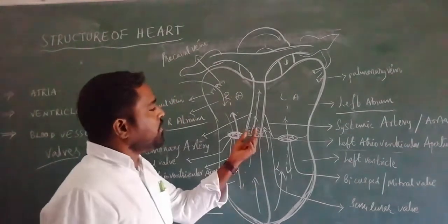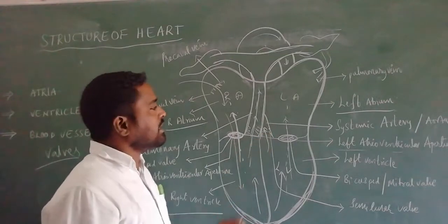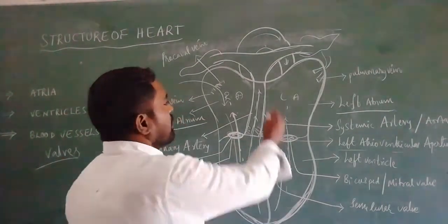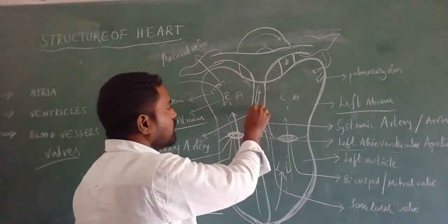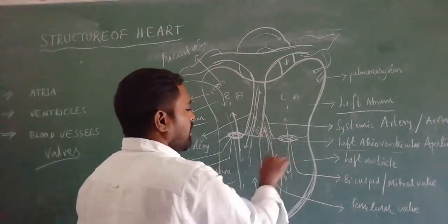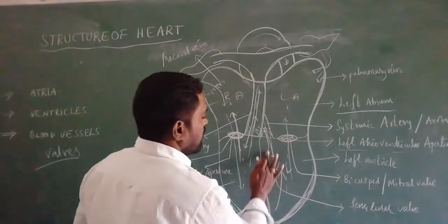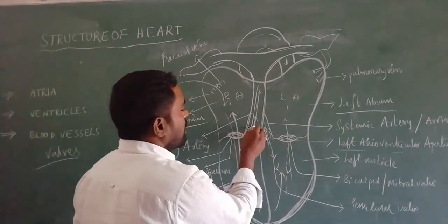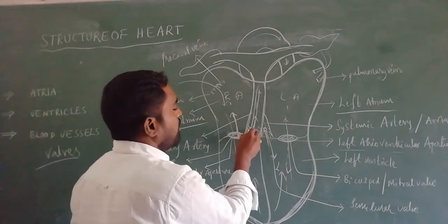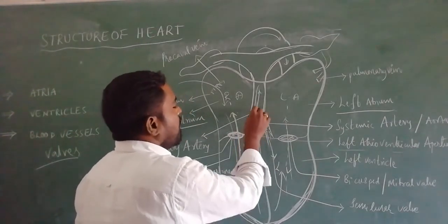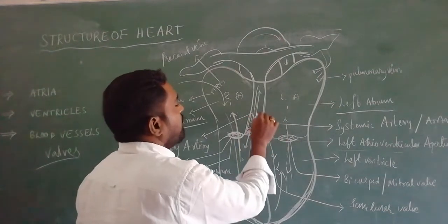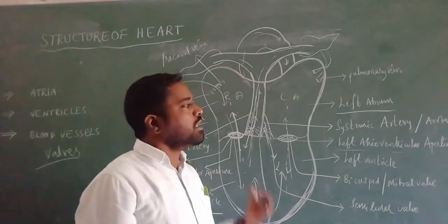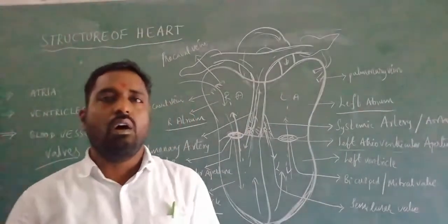The semilunar valves function during the relaxation of the heart. When the ventricles are relaxed, blood may be forced back from the arteries to the ventricles. To prevent this backflow, the semilunar valves close, preventing reverse flow back into the ventricles. This concludes the total structure of the heart.